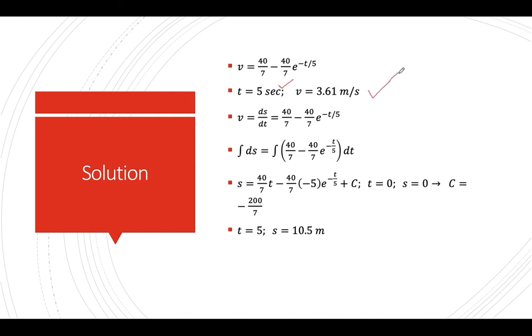And to solve for the distance, we replace the velocity from here. This is your v as a function of time. So replace v by ds over dt. This is variable separable. Now we can integrate. ds, which is s, and then on the right-hand side is a function of time t.